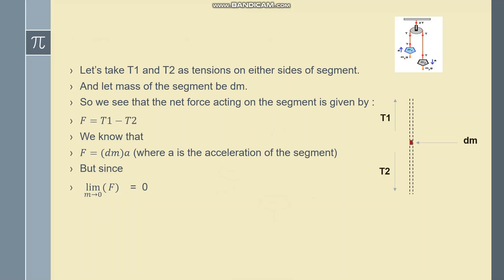So we see that as the mass tends to 0, we get the total force F going to 0. And if we use this in the previous equation, F is equal to T1 minus T2, we can see that T1 minus T2 equal to 0, or T1 equal to T2.